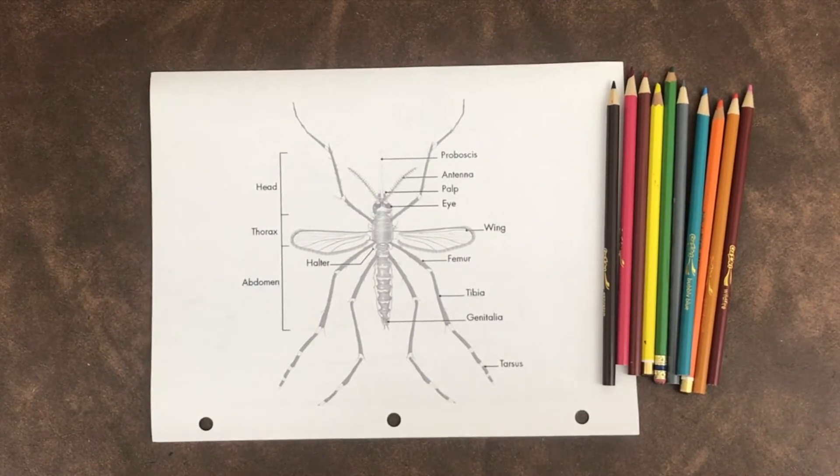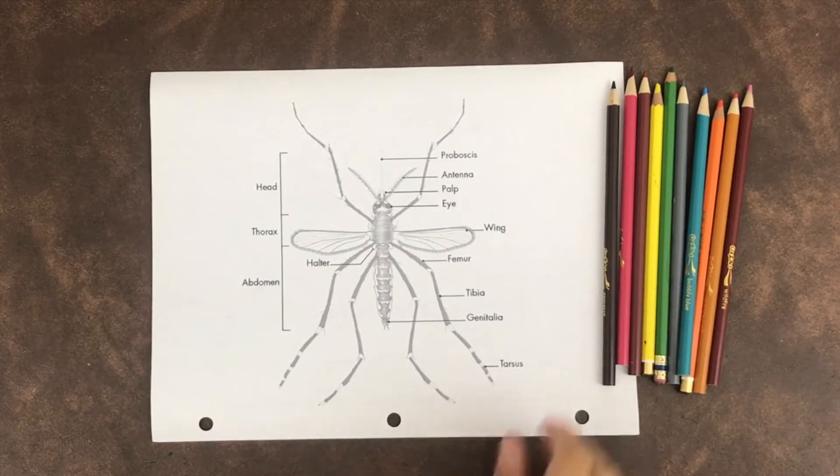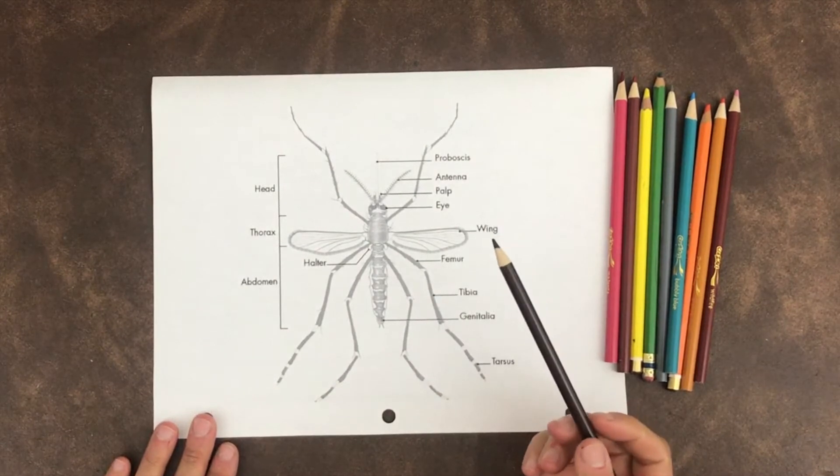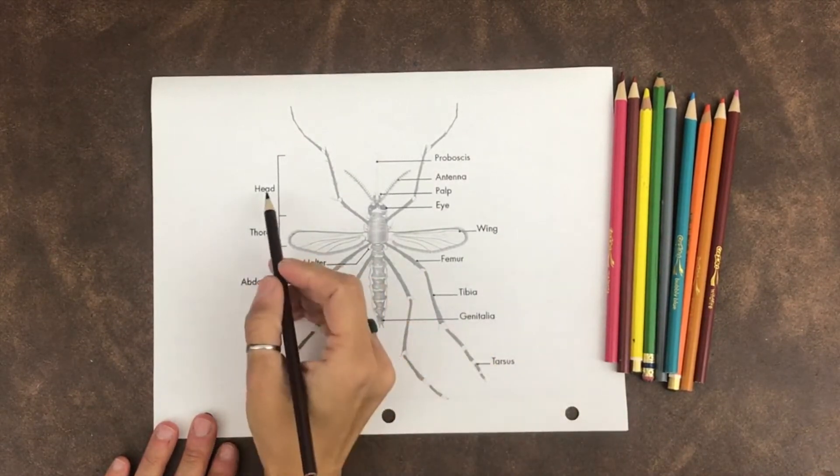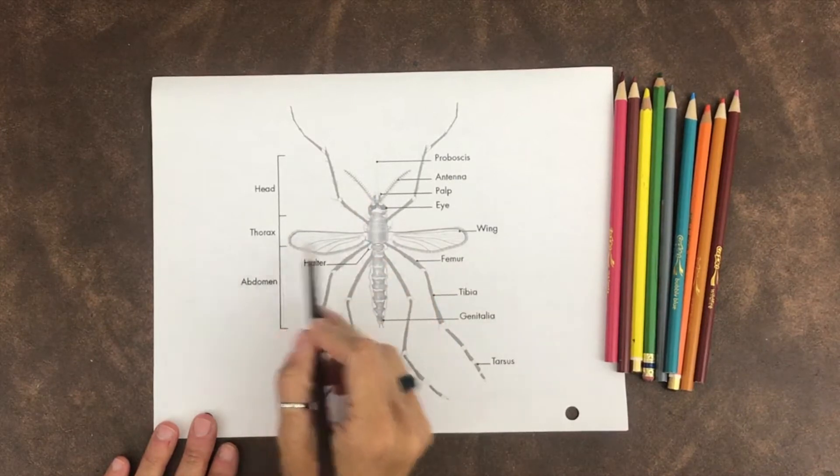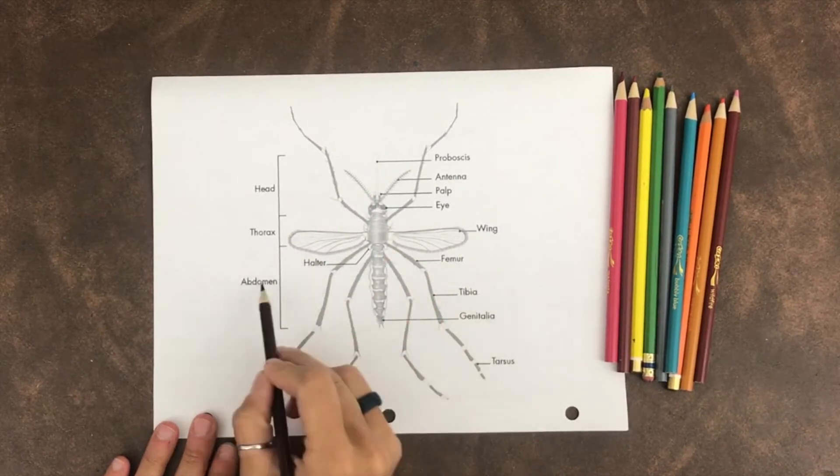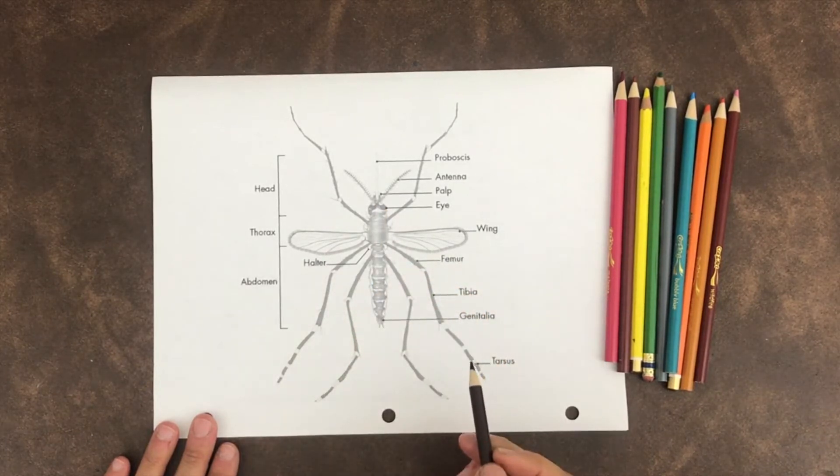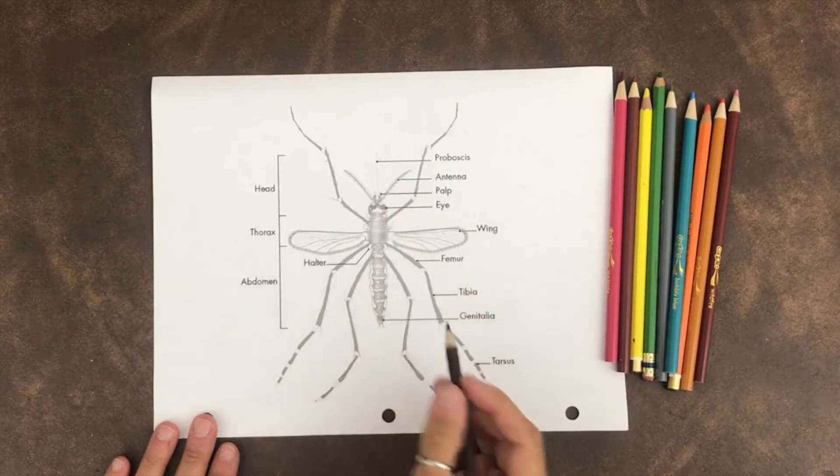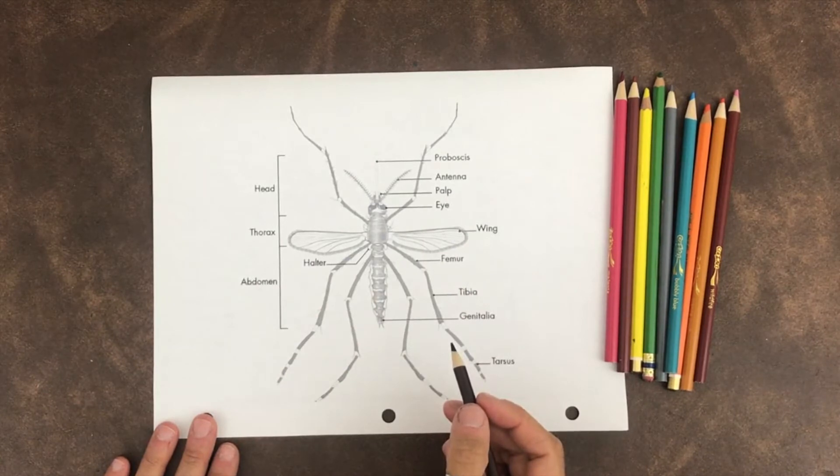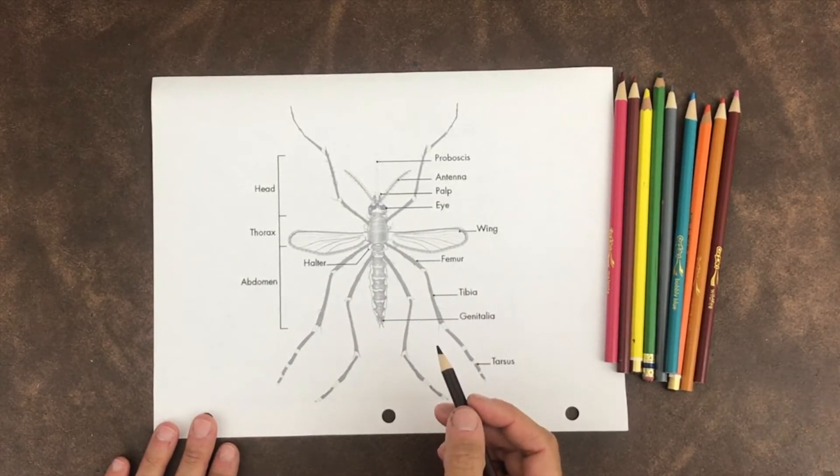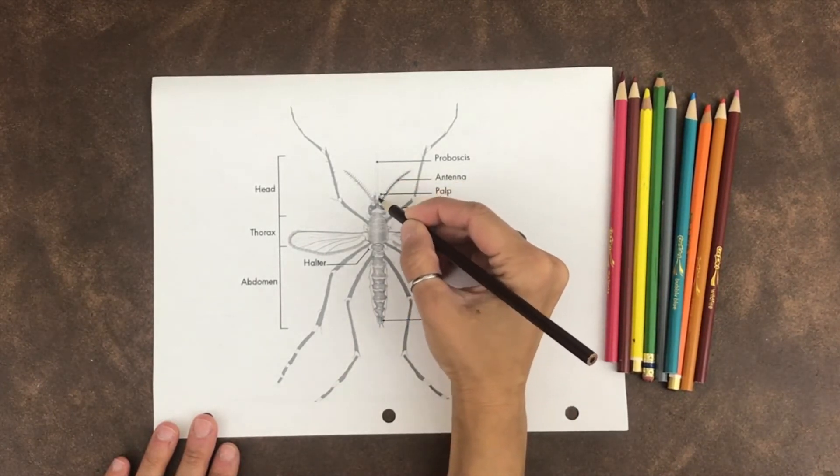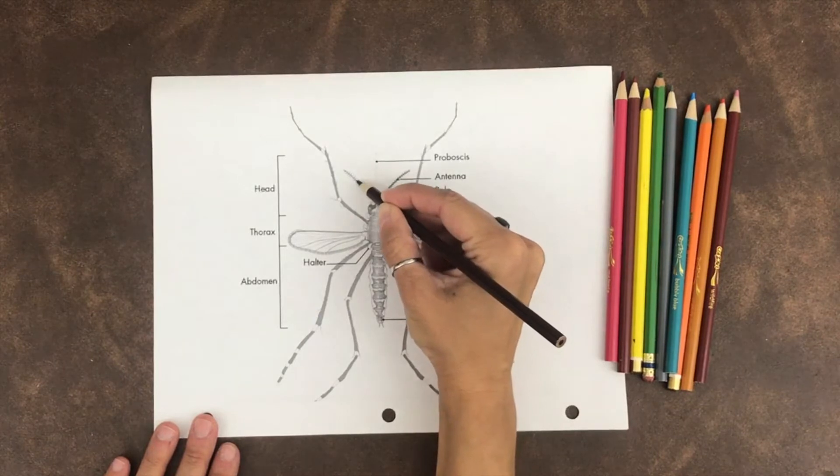We're going to go over the body parts of a mosquito. As you know, an insect has three parts: the head, the thorax, and the abdomen. We're going to start at the top, at the head, and look at the parts there first. First, you can color in the antennae. There are two antennae.